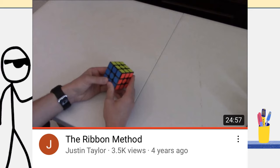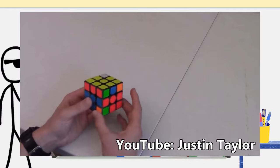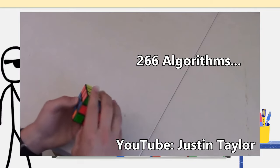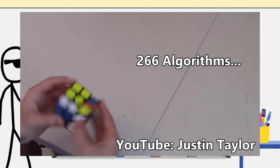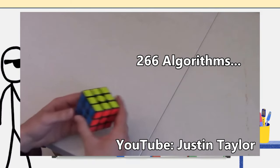This method was developed in 2017 by Justin Taylor. His video showcasing his new method is actually the only video on his channel. The ribbon method is pretty good, but you do need to learn a total of 266 algorithms. Almost no one has learned it yet, as you need to learn a lot of algorithms, and it barely saves any time over CFOP.